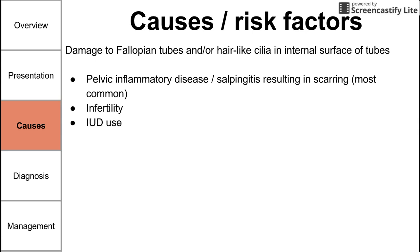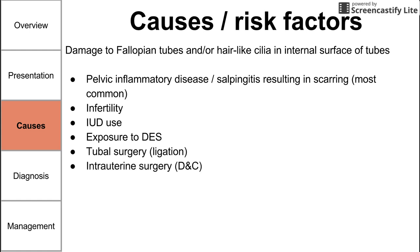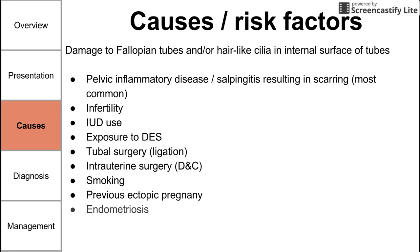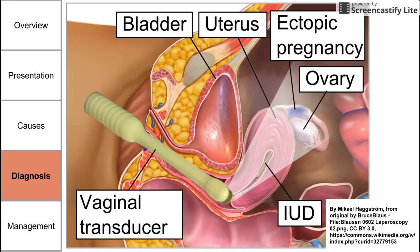IUDs are associated with ectopic pregnancy, as is exposure to DES. Tubal surgeries like tubal ligation are associated, as are intrauterine surgeries like D&C, which damage the endometrium. Smoking is also associated with ectopic pregnancy. Previous ectopic pregnancies are a big risk factor for future ectopic pregnancies, and endometriosis is another risk factor.